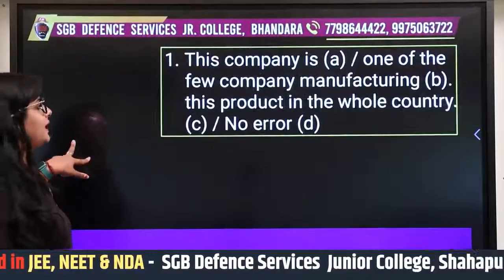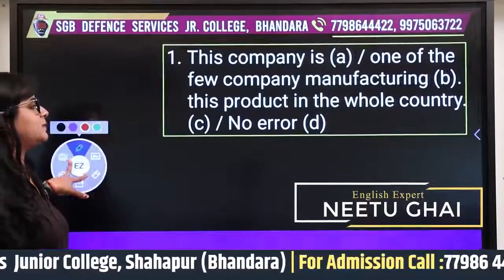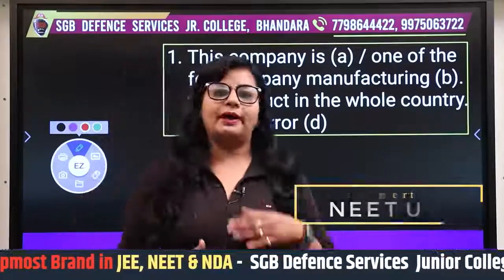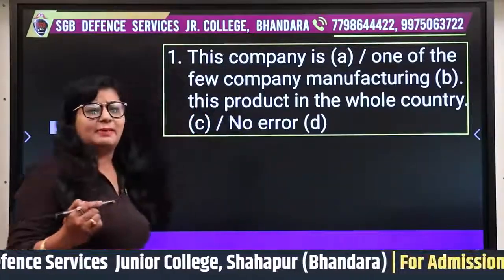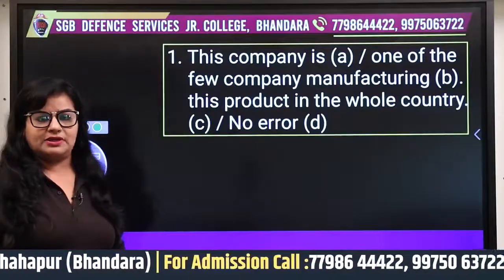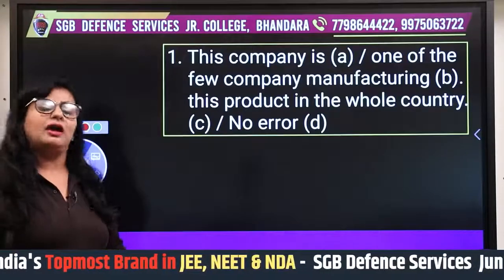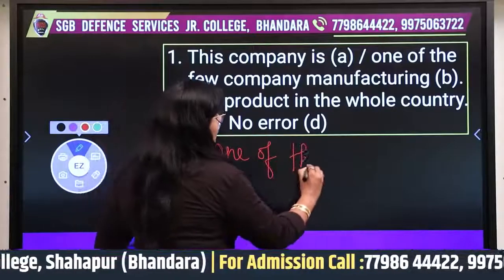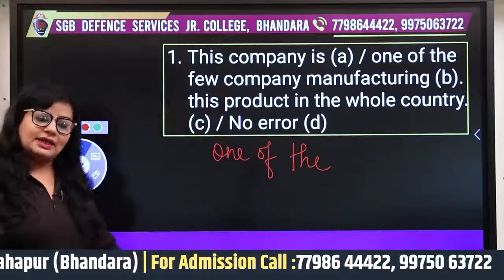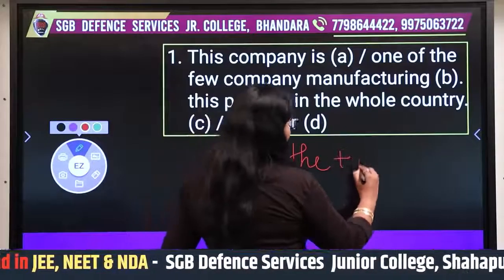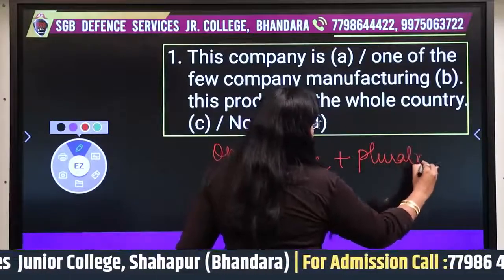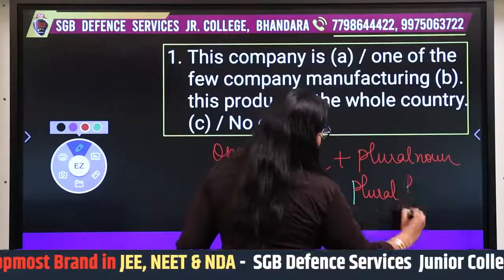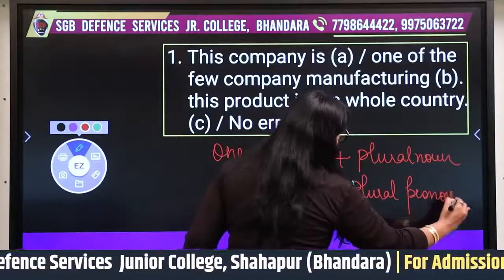The first question was: 'This company is one of the few companies manufacturing this product in the whole country.' Remember, whenever there is a phrase like 'one of the,' after it always — and always — a plural noun or plural pronoun comes.